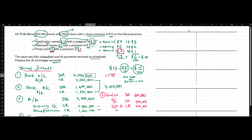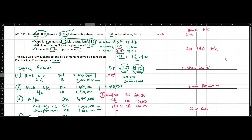Now let's move on to the ledger accounts. We need a bank account, an application and allotment account, an ordinary share capital account, a share premium account, and a final call account. Recording in thousands: the first journal entry debits the bank account with $2,000 (thousands) and credits the application and allotment account with $2,000.